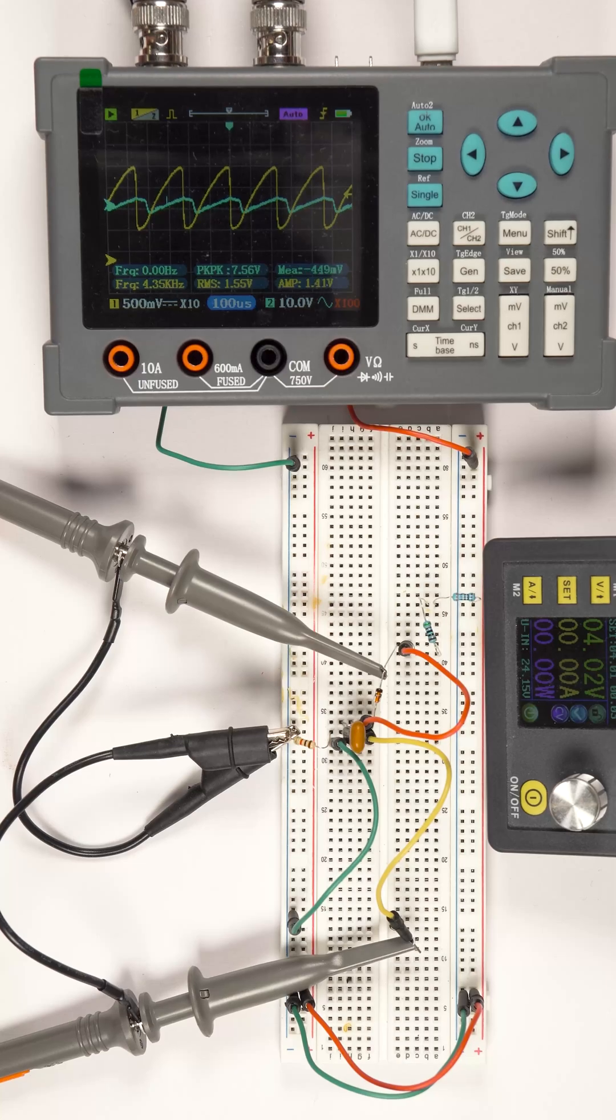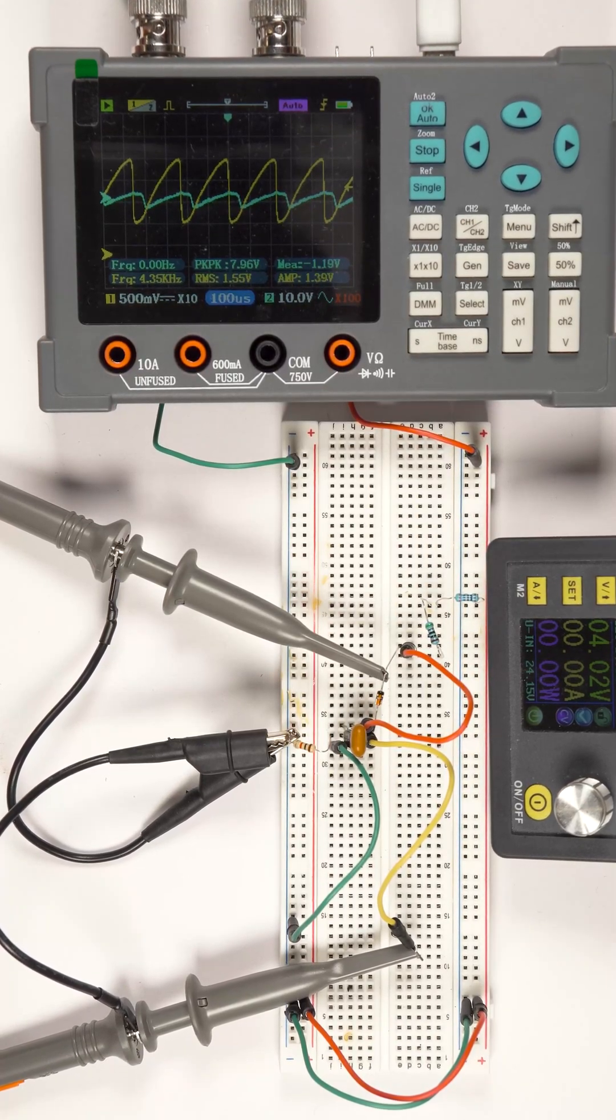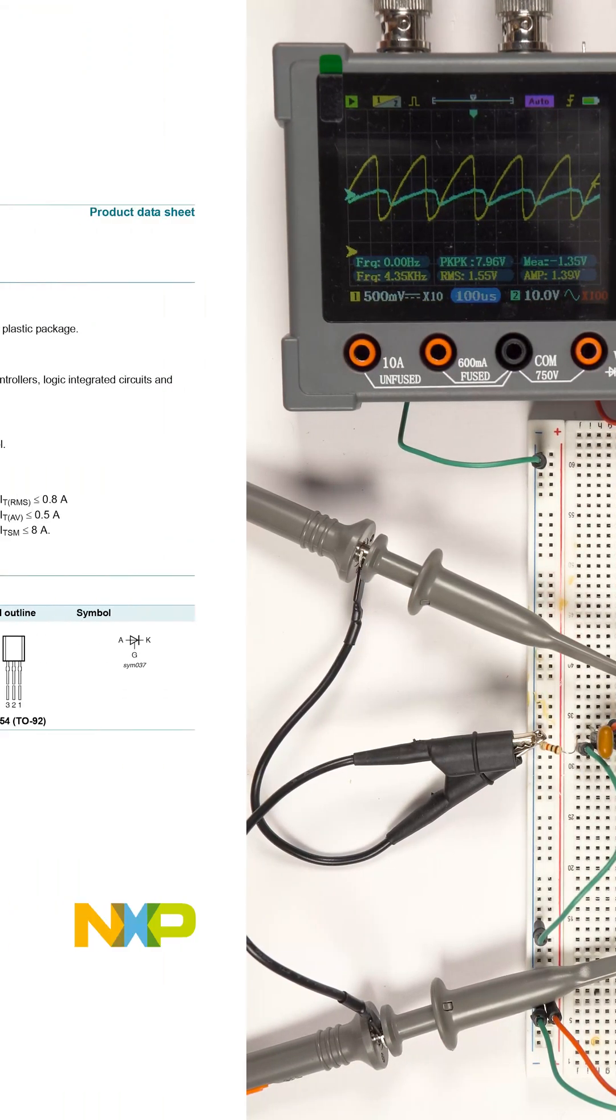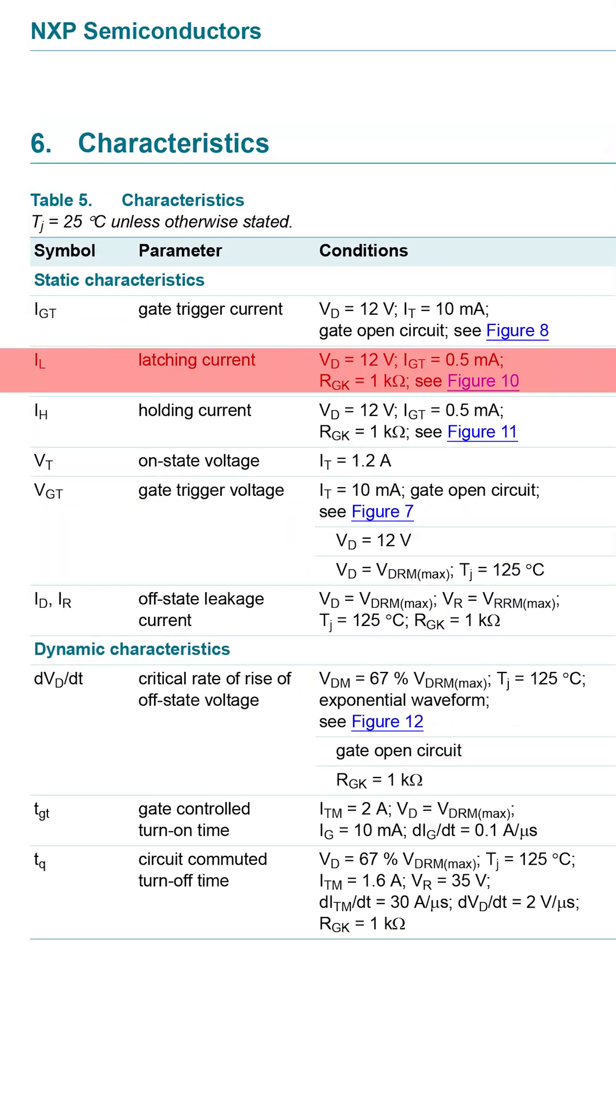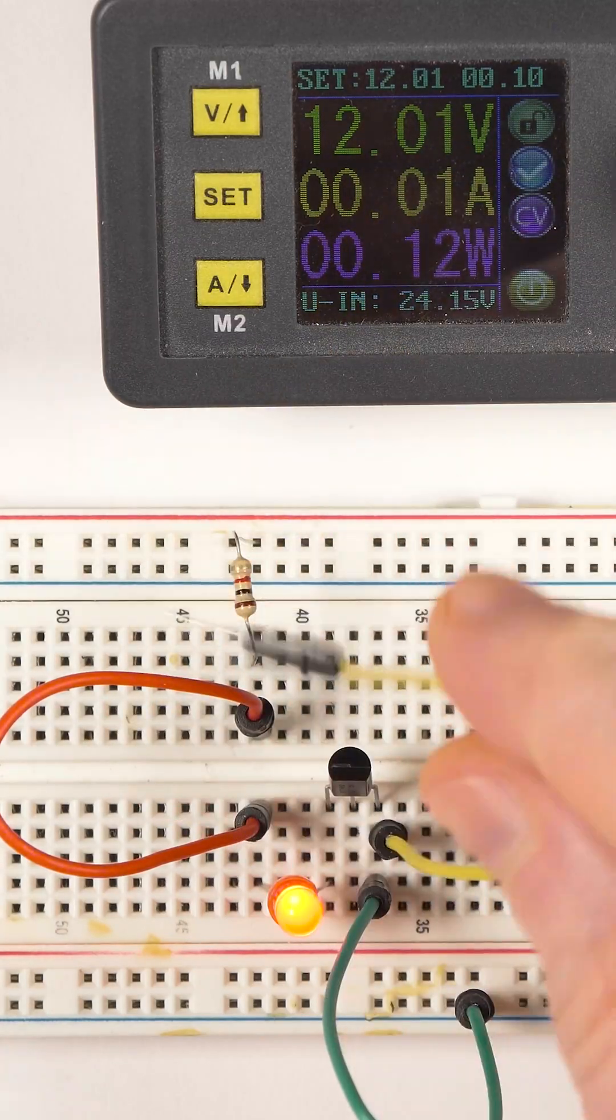But before we dive into it, we need to learn about thyristor's important parameter called latching current. Latching current is the minimum current across anode and cathode to keep it in the ON state. If the current drops below it, the SCR will shut off.